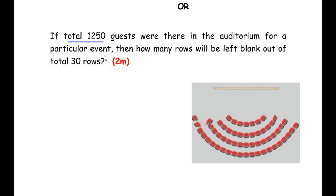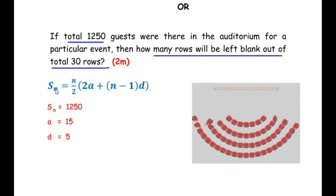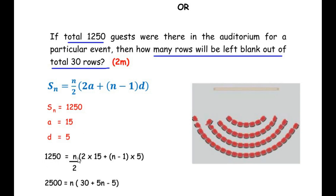Now for the 'or' question: if a total of 1250 guests were in the auditorium for a particular event, how many rows will be left blank out of the total 30 rows? This is very similar to the previous sub-question. We again use the sum formula: S_n = (n/2) × (2a + (n − 1) × d), where S_n = 1250, a = 15, and d = 5.